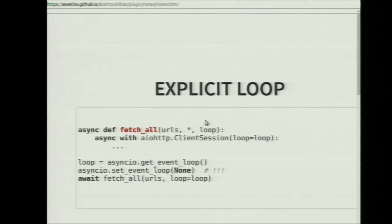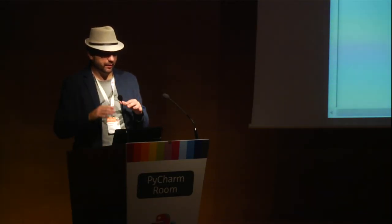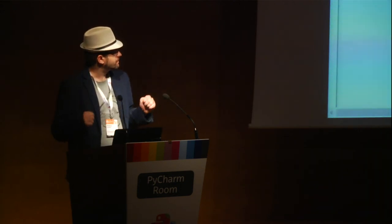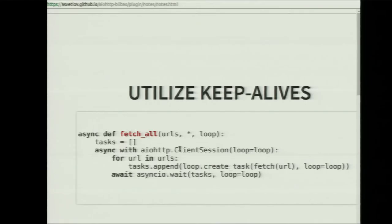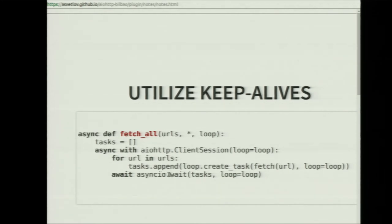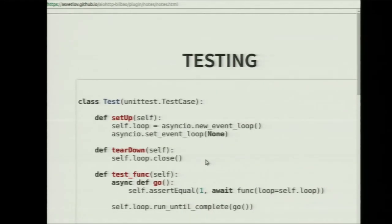I also highly recommend to pass the loop everywhere, or don't pass it at all. Why is it important? It's important because it's easy to write tests with an explicit loop. Use the client session for sharing state and for keeping open connections — for supporting the keep-alive network pattern. We have one session, we have several tasks for fetchers, we wait for all these tasks to complete. That's it.